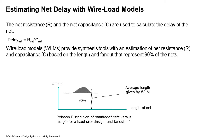Wire load models are calculated based on the average statistical net length over many designs, using a Poisson distribution to determine the average net length for nets within a certain block size. These average statistical values are plugged in to determine the corresponding resistance and capacitance, and then the delay of that particular net is calculated based on that length.